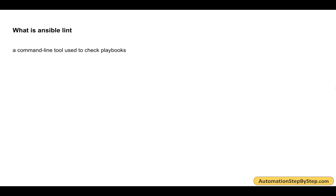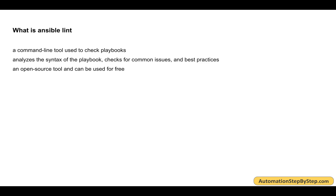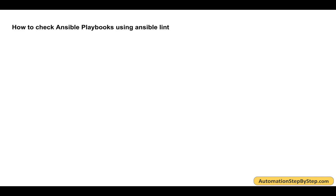This is going to be very easy and very interesting. Let's get started. Ansible Lint is a command line tool that we can use to check our playbooks. It checks the playbooks for syntax, common issues, best practices, roles, etc. And it is completely free and open source.